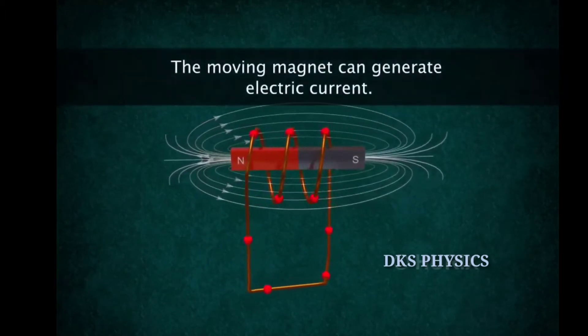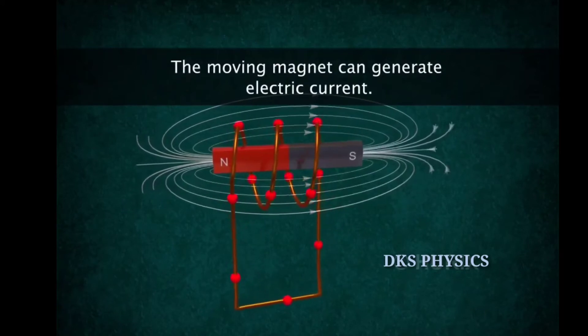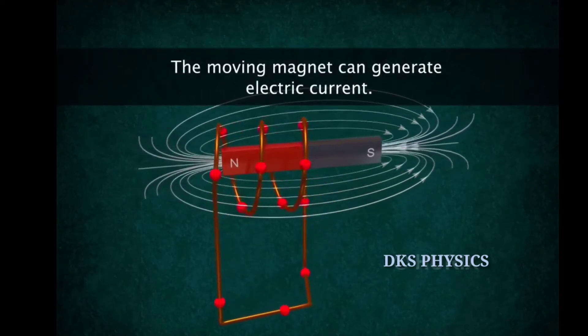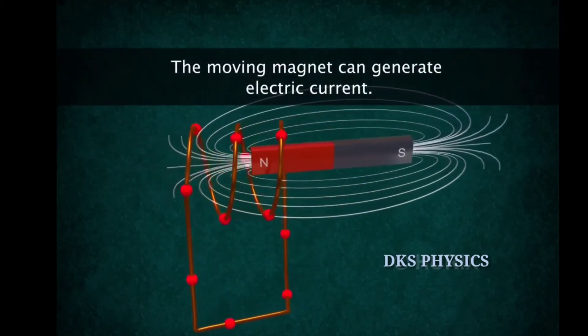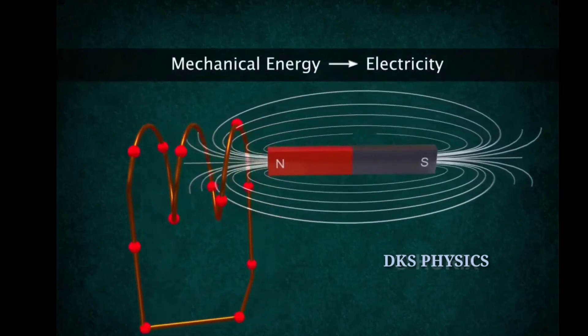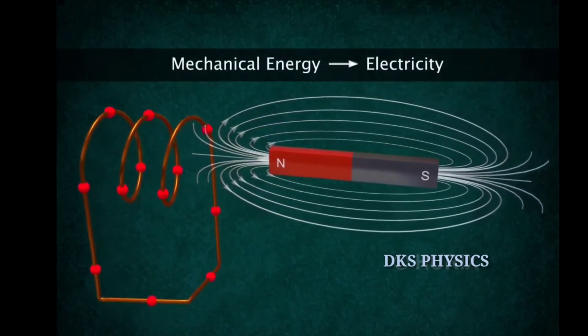In 1831, Faraday found that a moving magnet inside a coil can generate electric current. It allows us to convert mechanical energy into electricity.